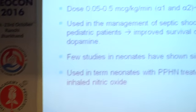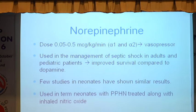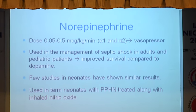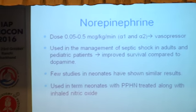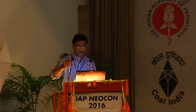Norepinephrine has not been widely used in newborns, but we have some reports coming in these days. It has been used successfully in pediatric and adult age groups in septic shock. In the dose of 0.05 to 0.5 micrograms per kg per minute, it has a predominant effect on alpha receptors and is a predominant vasopressor. There are some reports in newborns showing that it decreases pulmonary vascular resistance. There are some case reports saying it can also be used when there is a fall in blood pressure, and norepinephrine can be used in PPHN also.